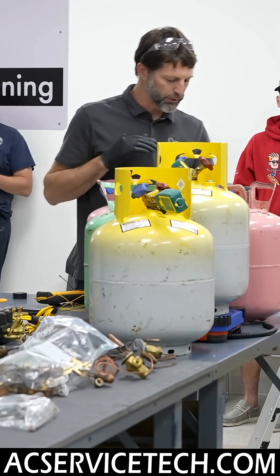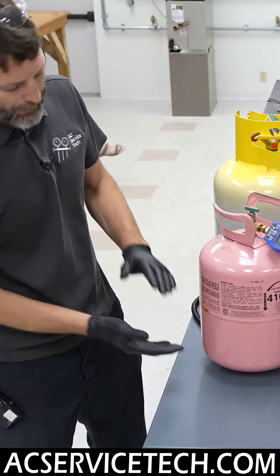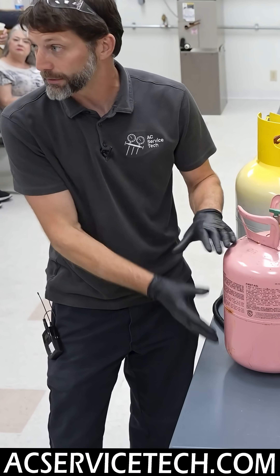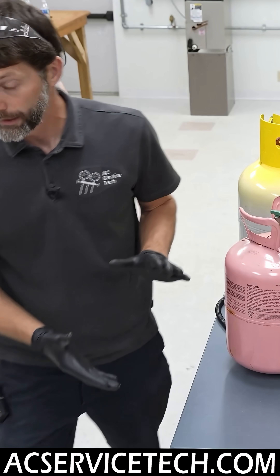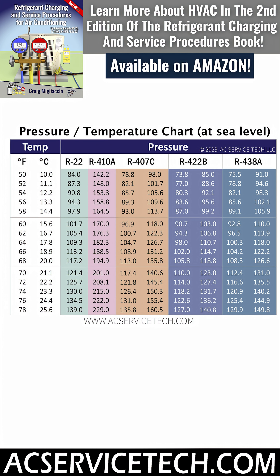What I want to go over is on your PT chart: anytime that you have a liquid and vapor in a tank, it's saturated. And if it's saturated, if we know the temperature of the refrigerant in the tank, we'll know the pressure. Vice versa, if we know the pressure, we'll know the temperature.